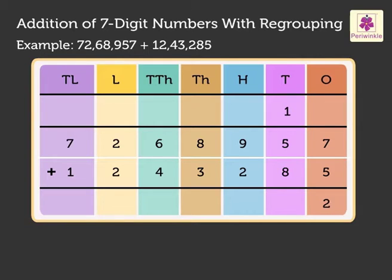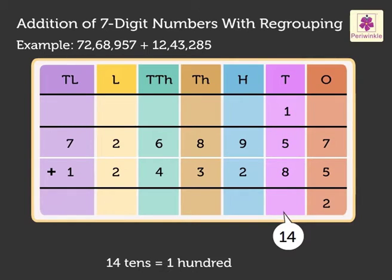Now, we add 1, 5 and 8. We get the number 14. Regroup the 14 tens to 1 hundred and 4 tens. Carry the 1 hundred to the hundreds column and write 4 in the tens column.